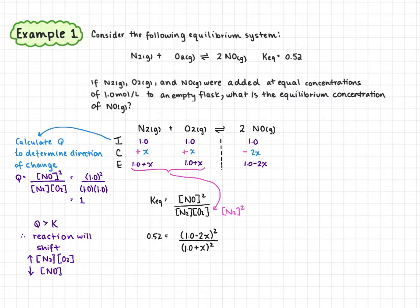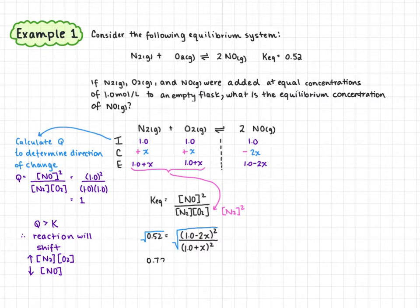Because we have squares on both sides, we can take the square root to cancel out the squares on the top and bottom of that fraction. The square root of 0.52 is approximately 0.72, and that's going to equal 1 minus 2x over 1 plus x.